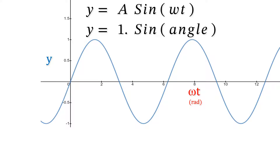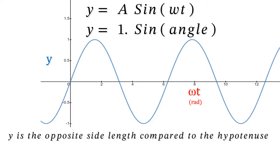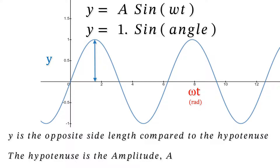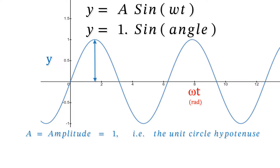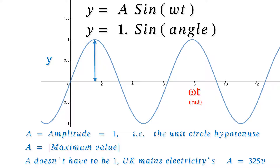So y equals a sine omega t, which is 1 times the sine of an angle for this particular waveform, because the amplitude is 1. The amplitude is always the maximum value that a sine function gets to away from the x-axis, but it doesn't have to equal 1.